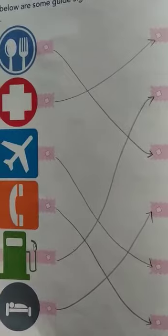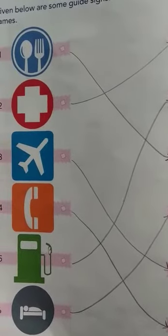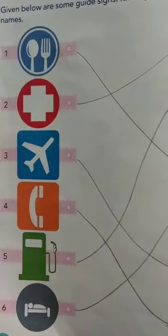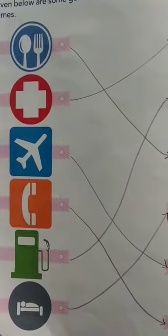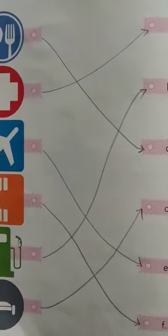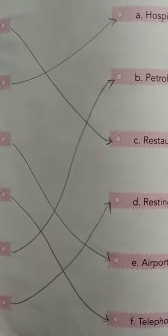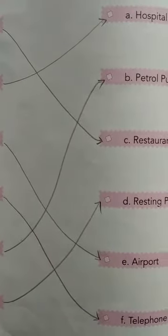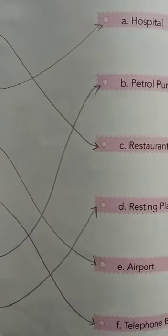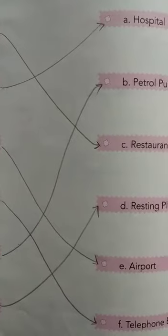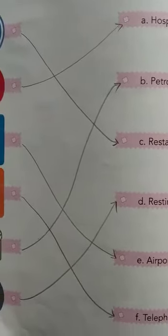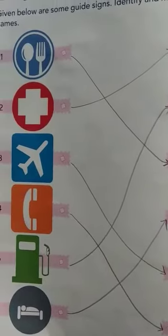The next one is an Aeroplane. The aeroplane is the sign of — everyone knows — Airport. A for aeroplane, A for airport.